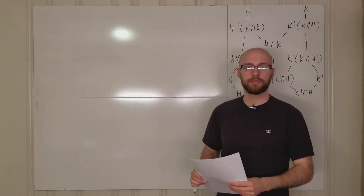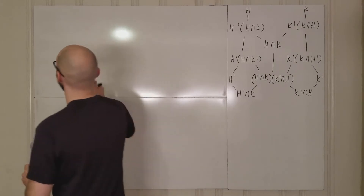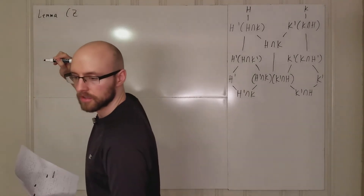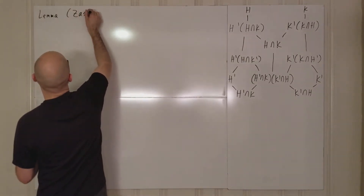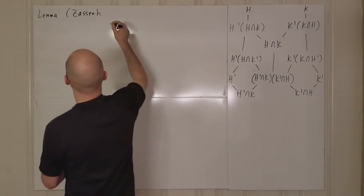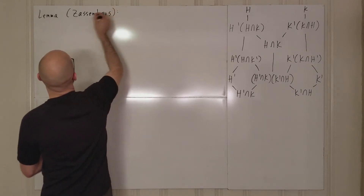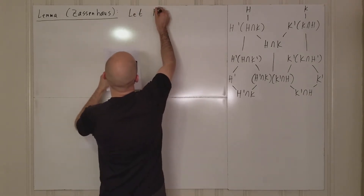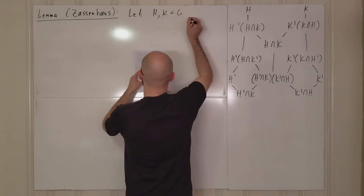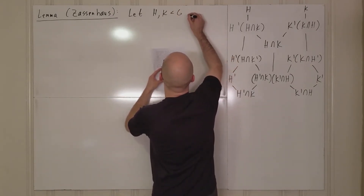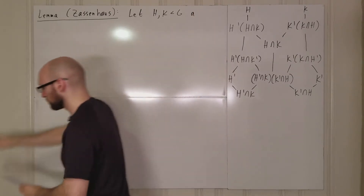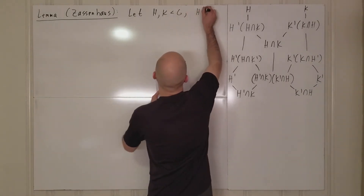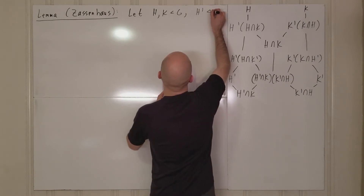Let's prove the Zassenhaus Butterfly Lemma. Let h and k be subgroups of a group g, and then we also have h prime and k prime. H prime is going to be normal in h,